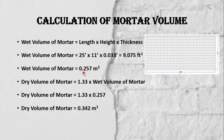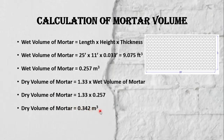Now convert this wet volume into the dry volume of mortar by multiplying by 1.33. So the dry volume becomes 0.3 cubic meters.